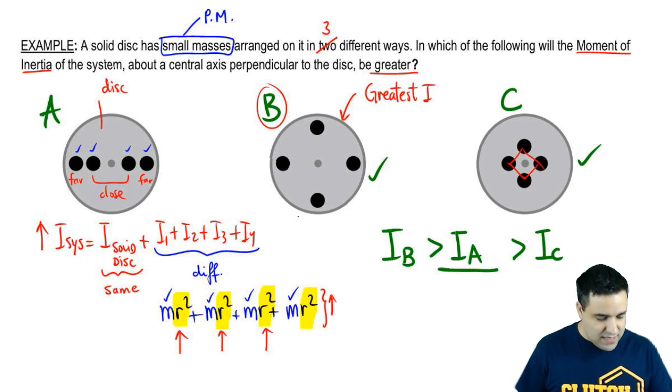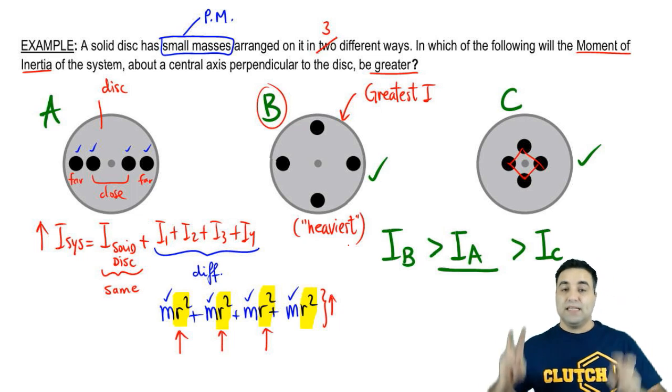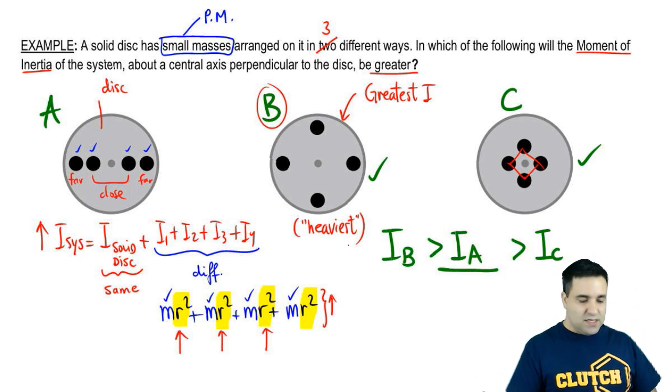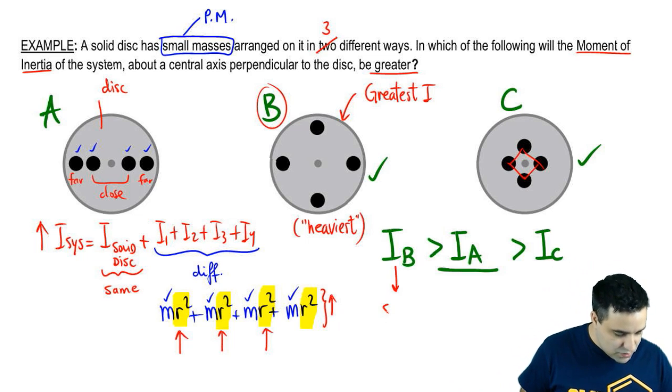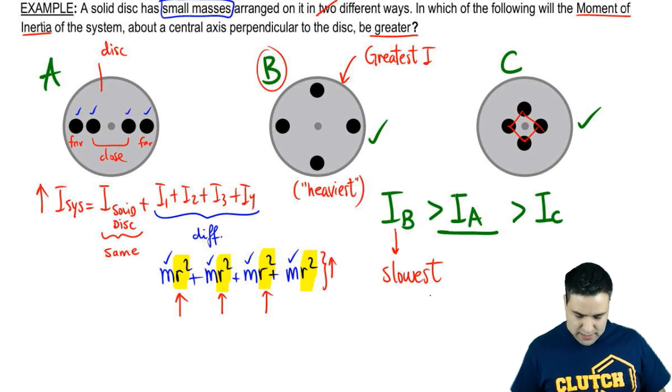This means that you can think of B as being the heaviest of the three. Even if the masses are the same, it's got the most inertia. Another way that this question could be asked is, if you apply the same force to it, who's going to rotate faster? Well, this guy is the heaviest, so it's also going to be the slowest. All right, so that's it for this one. Let's keep going.